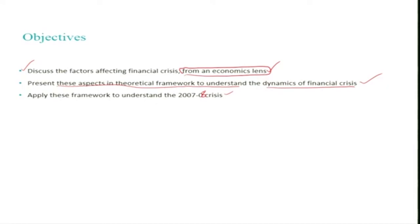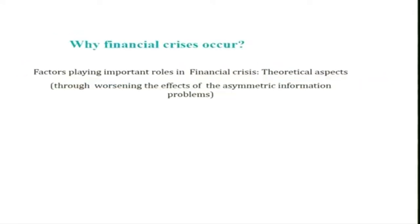When we apply this theoretical perspective in the empirical part, it is not necessary that each factor is going to work the way we expect. There will be many counter-factors in the actual economy because the real economy is more dynamic and complex, with several factors working in both directions. Let us start: why do financial crises occur? We will discuss factors playing important roles in financial crisis, mostly from a theoretical perspective.